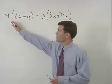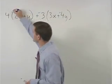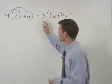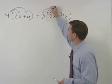Now we can distribute the 4 through the first set of parentheses and the negative 3 through the second set of parentheses.